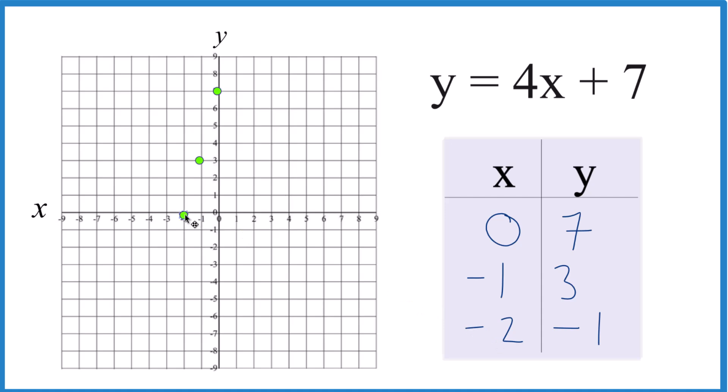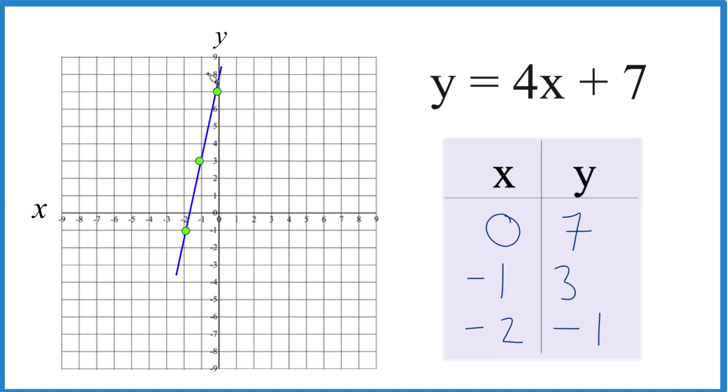x is negative 2, and then y, that is negative 1 right there. You can see our line. Let's put a line through that. Then we'll put arrows to show it goes to infinity. That's the graph for y equals 4x plus 7.